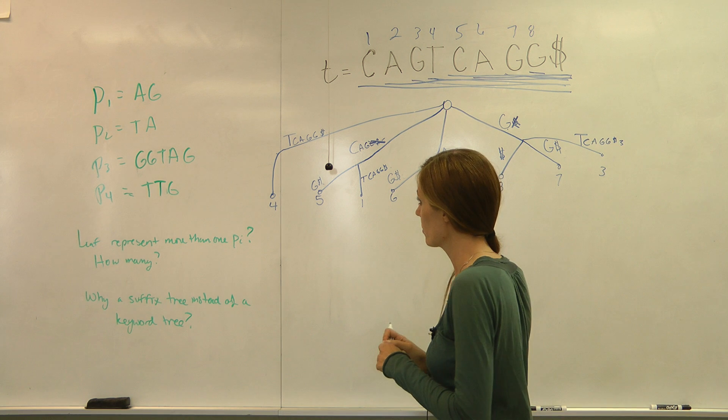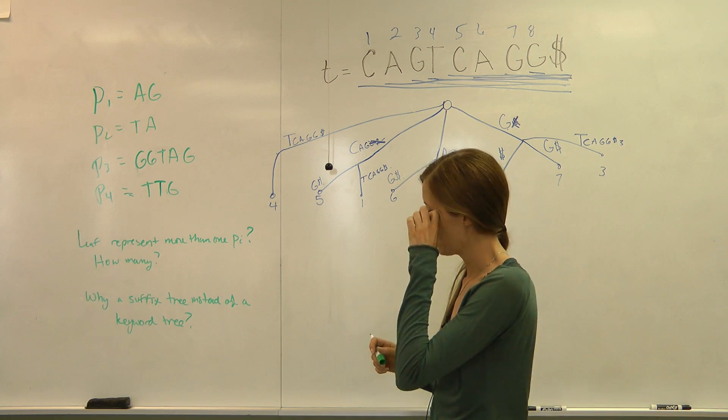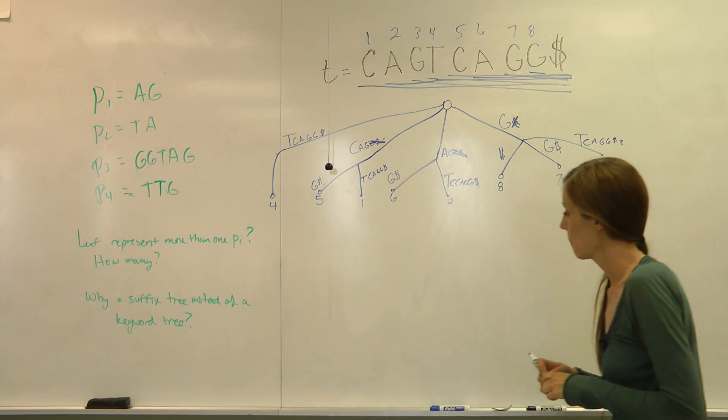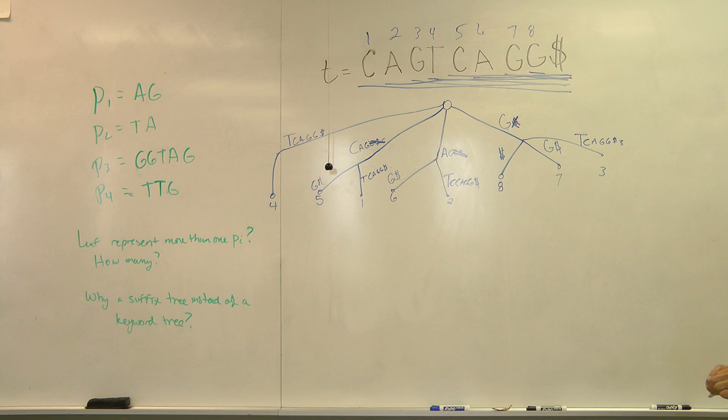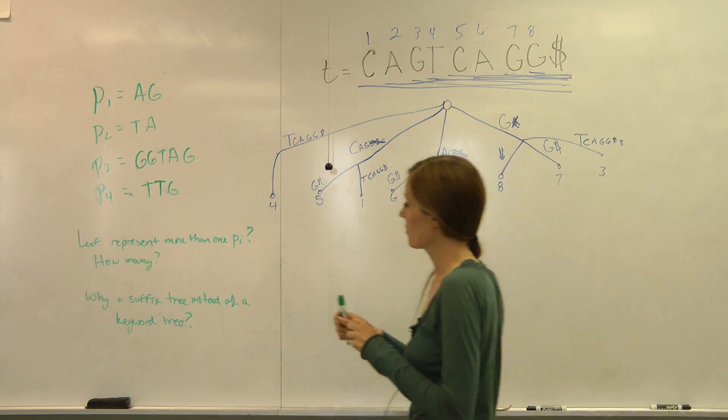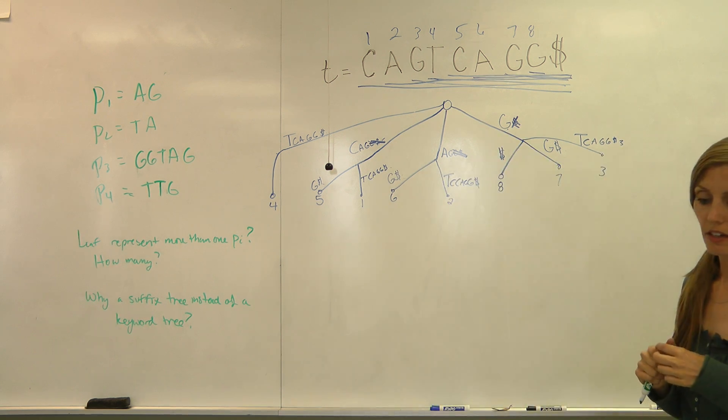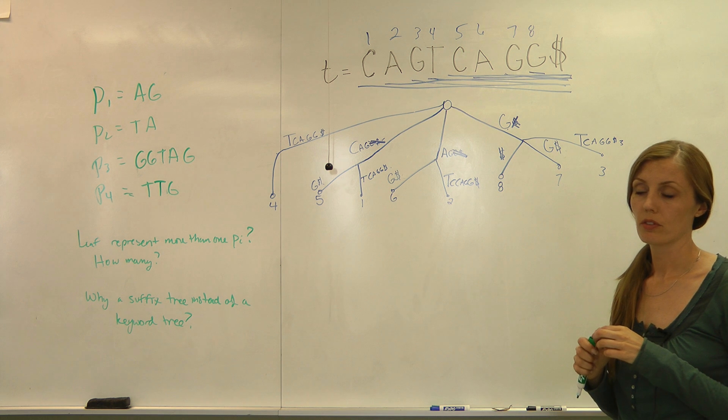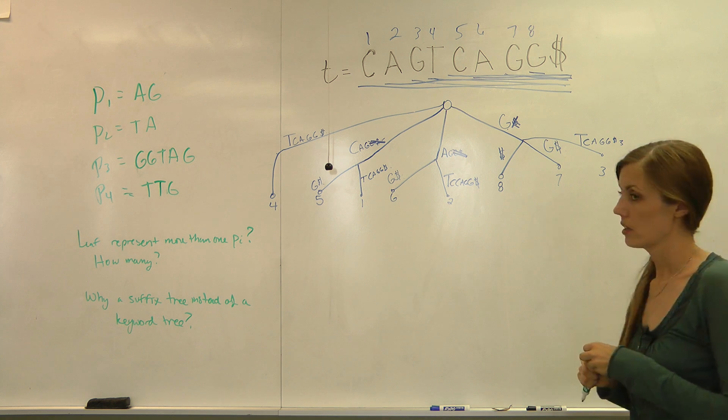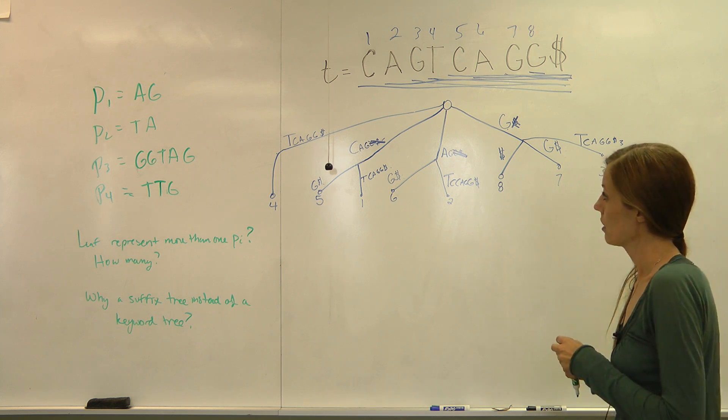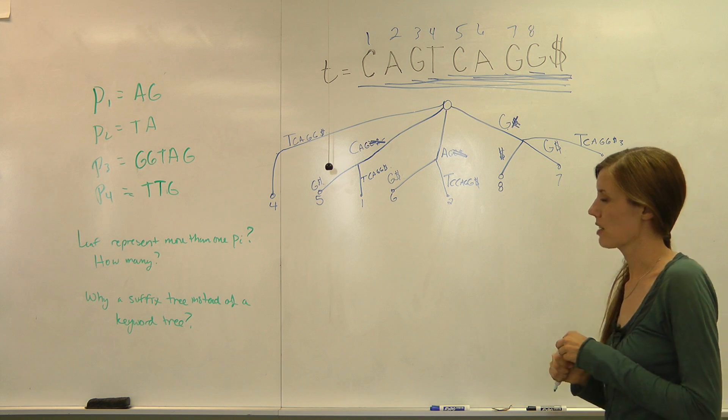Okay, so the next question or the next part of question two is to find the occurrence of these patterns, or to see if those patterns exist in that text, and to show what branch represents that pattern.